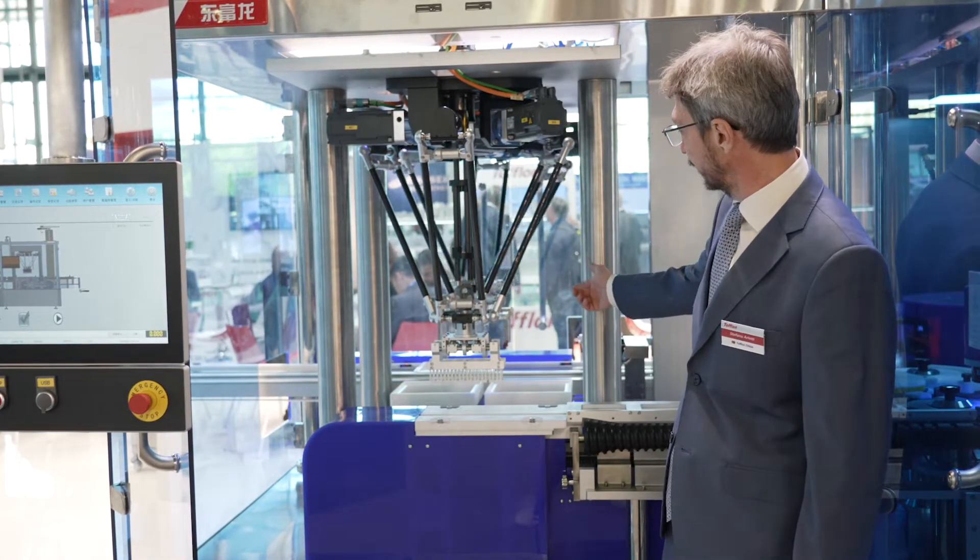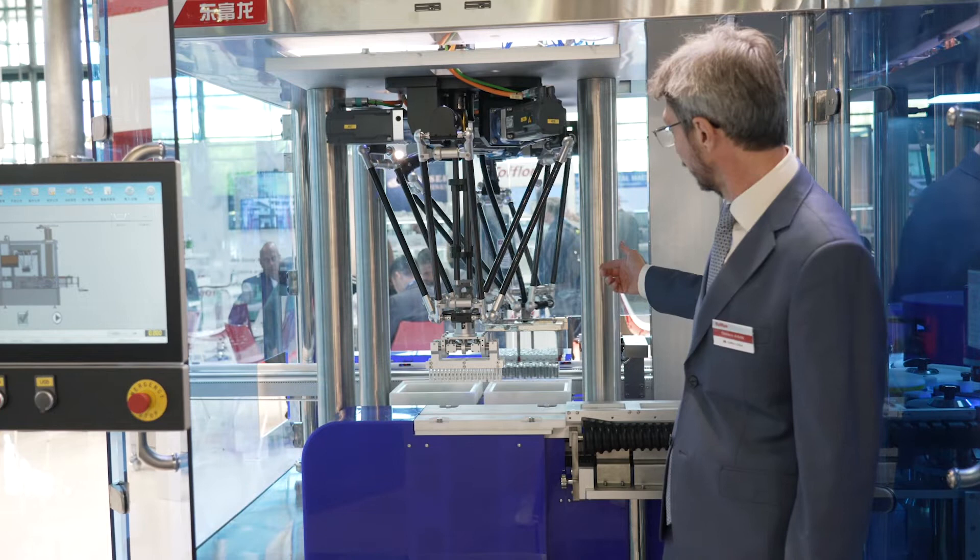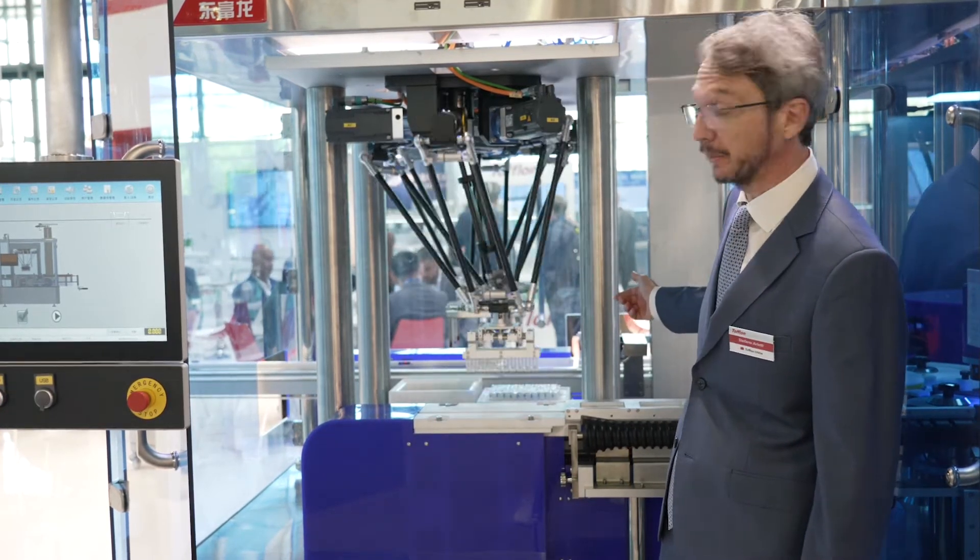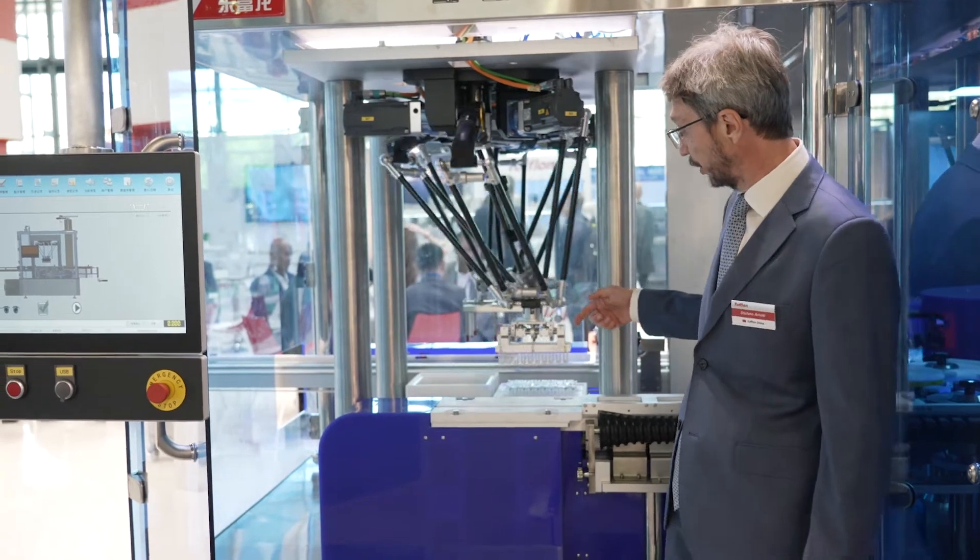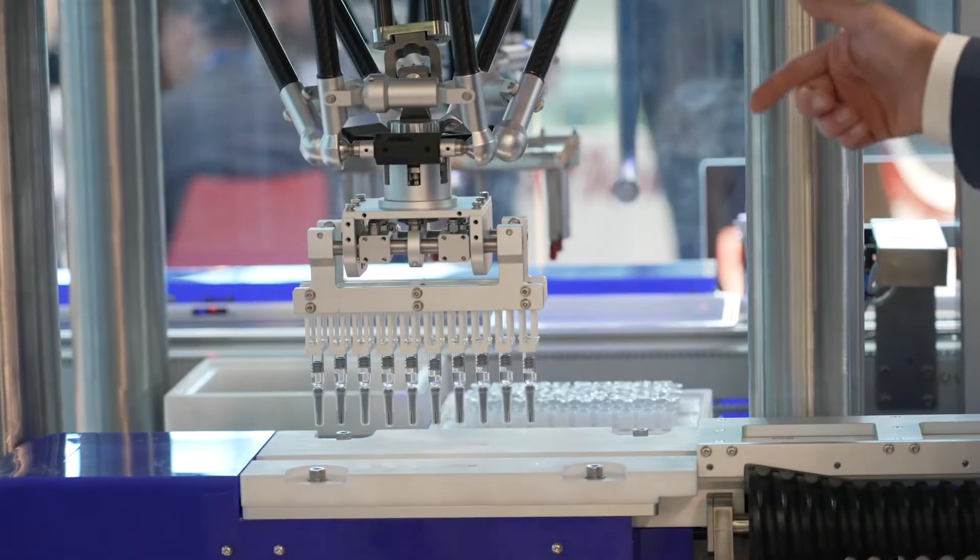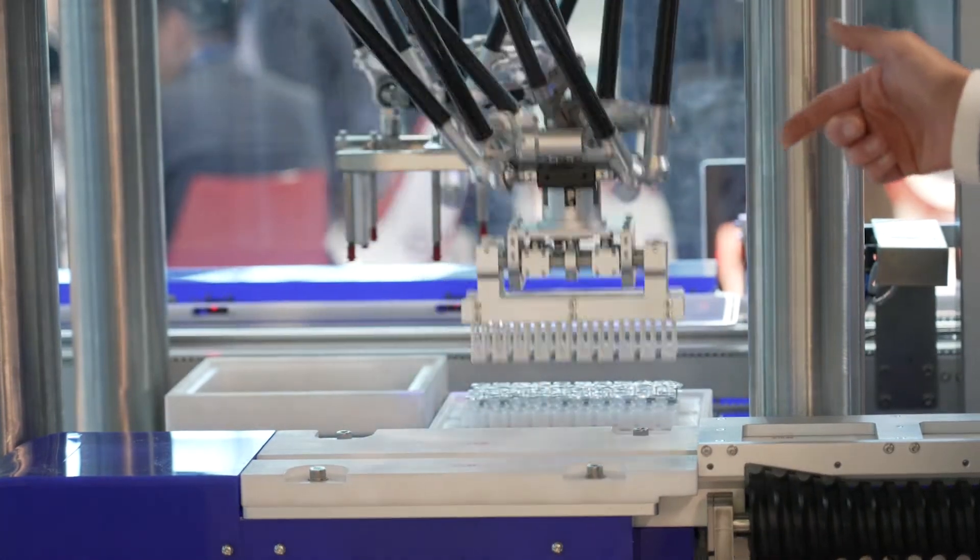This is the denesting area. I will show you more in detail. The full nest is coming in. Then the first robot puts the nest in the denesting area. Then the second robot will pick up the syringes row by row and load in the infeed area of the inspection machine.